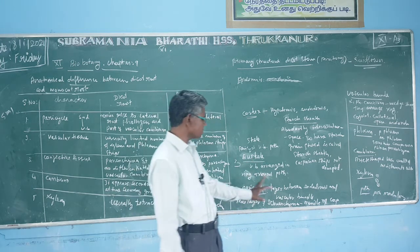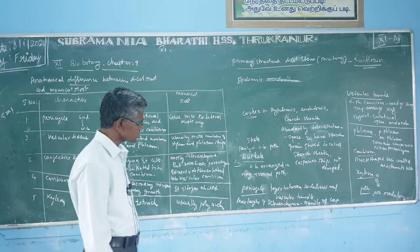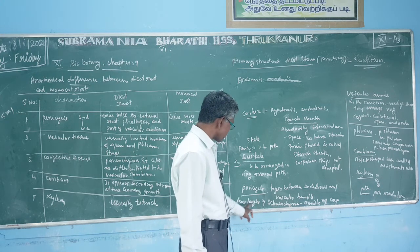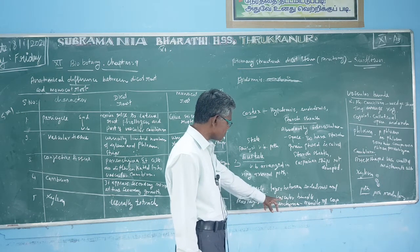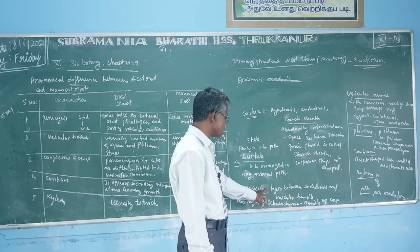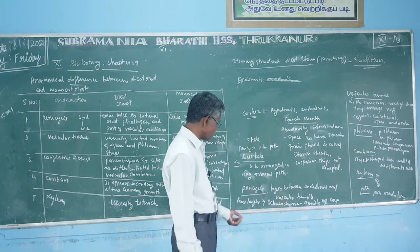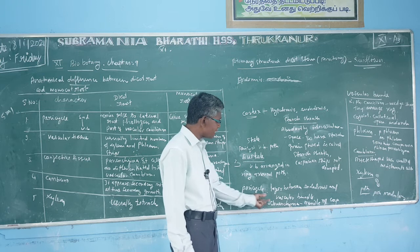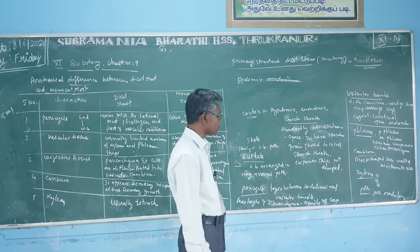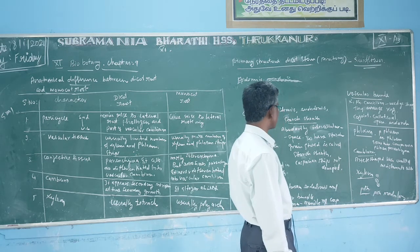The pericycle is the layer between the endodermis and the vascular bundle. In the pericycle, there are a few layers of sclerenchyma cells — this is called the bundle cap. The bundle cap provides mechanical support.